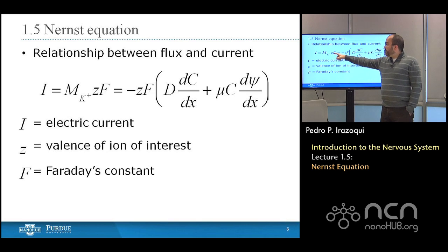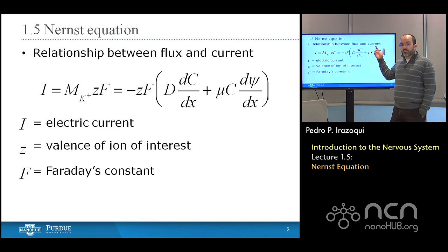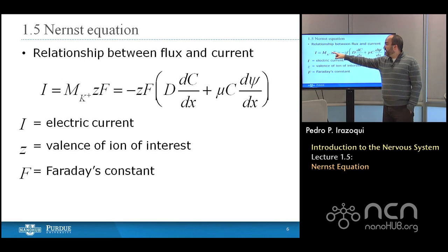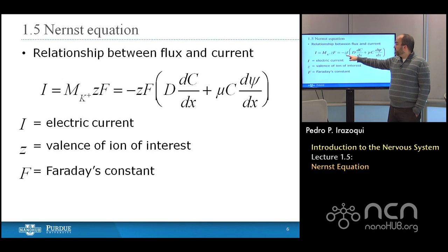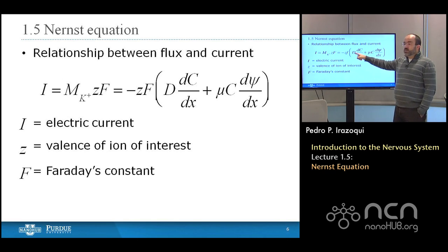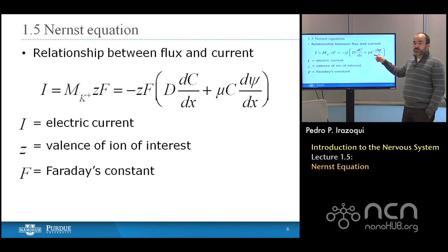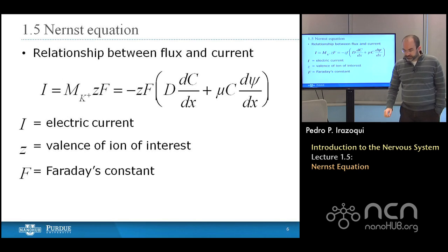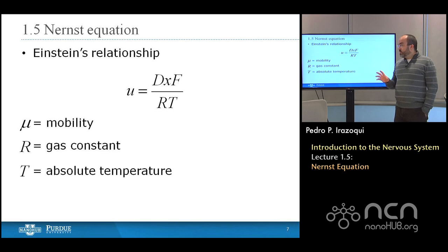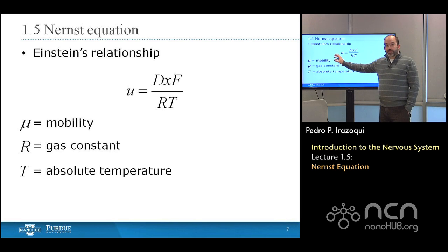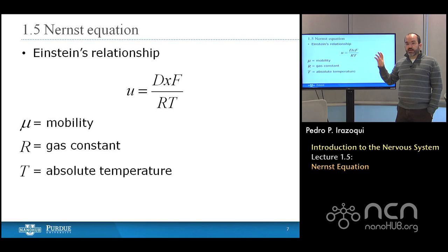So the current I is equal to MZF. We substitute the total molar flux into this equation and find that the current I equals negative Z times F — Faraday's constant — multiplied by D times the derivative of concentration with respect to X, plus mu times the concentration times the derivative of the local potential psi with respect to X. Now we want to convert some of those variables to simplify the equation, specifically converting the mobility into variables already present in the equation.